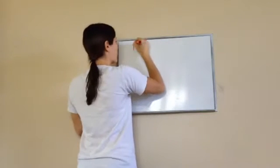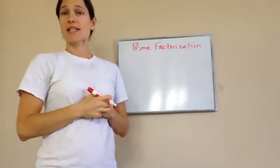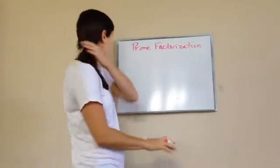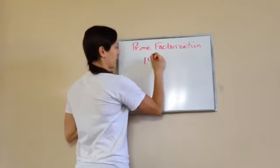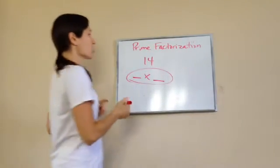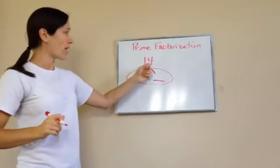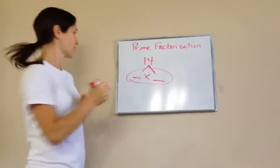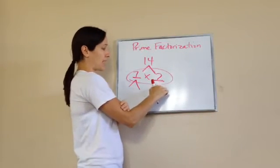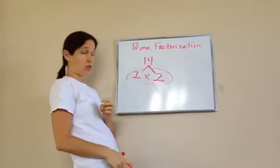Let's talk about something called prime factorization. There are two things that I'm going to teach you about prime factorization. Basically, what you're doing is taking any number that I give you and learning to factor it all the way down to prime numbers. So if I were to take the number 14 and I wanted to factor it all the way to just prime numbers, we're going to do something called a factor tree. I'm going to ask myself, what number will go into 14? Seven times two. So 7 and 2 — can I break down 7? No. Can I break down 2 into more prime numbers? No. So the prime factorization for 14 is 2 and 7.